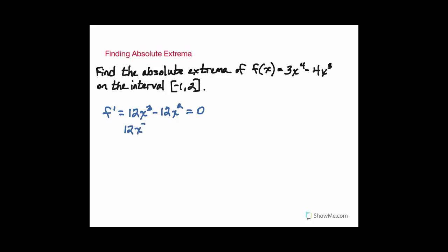We'll go ahead and solve this out by factoring out a greatest common factor. And we find that our critical numbers, we have two of them: x equals zero and x equals one. These are our critical numbers.